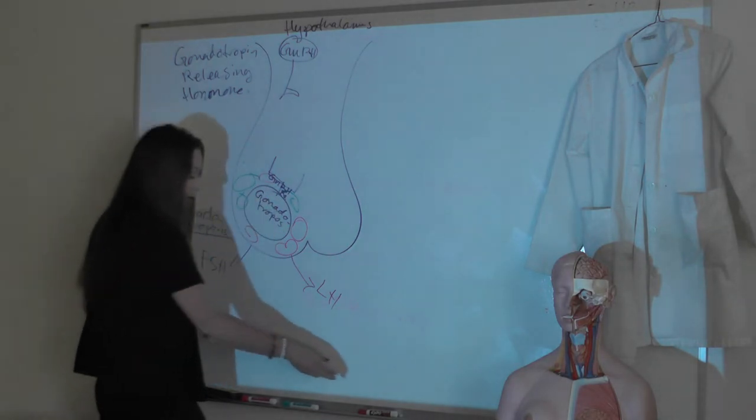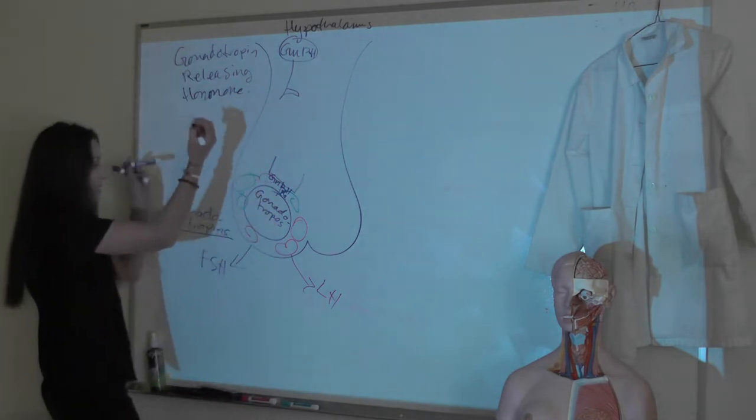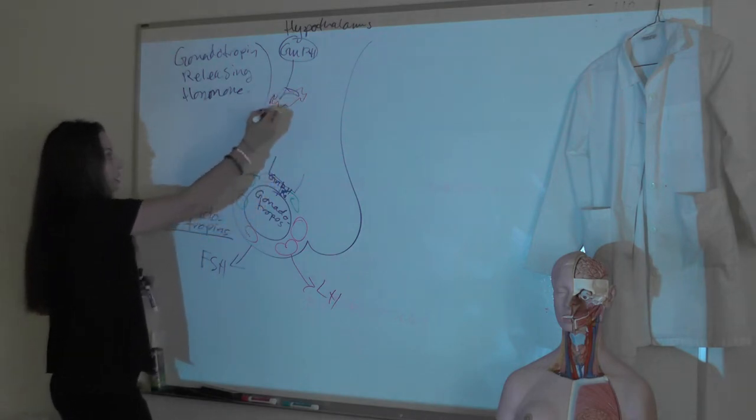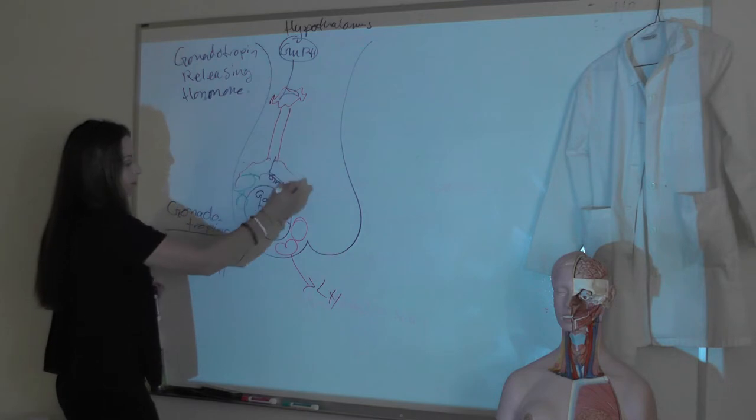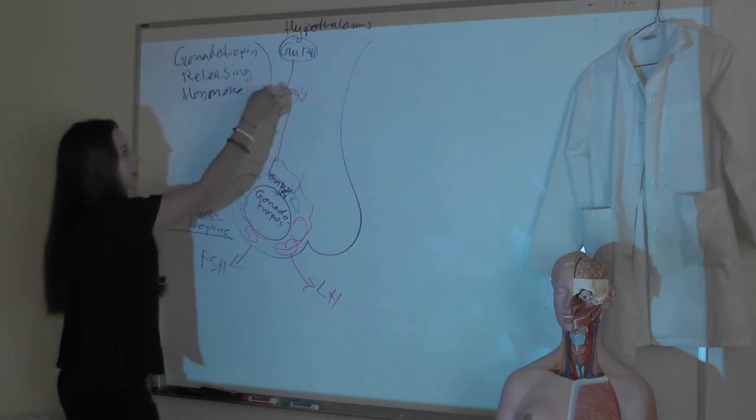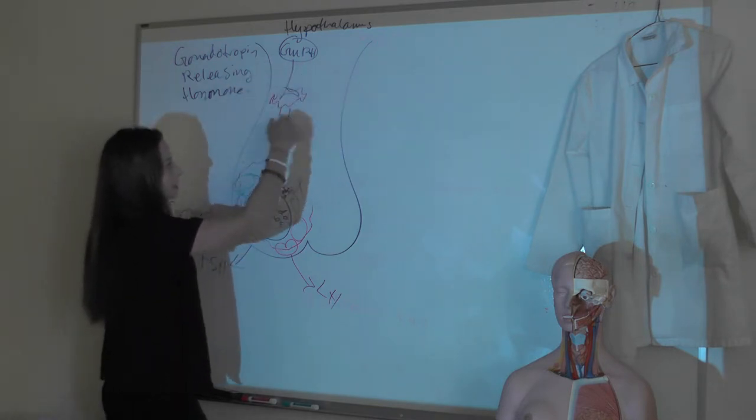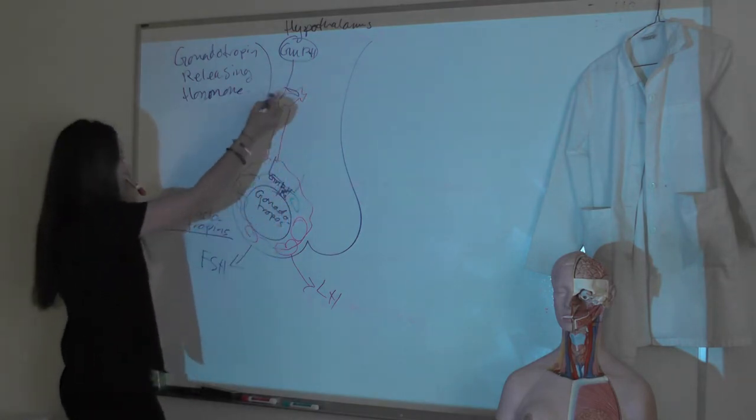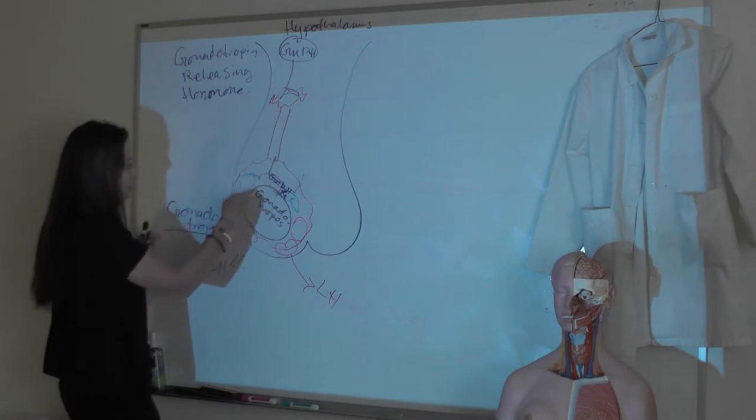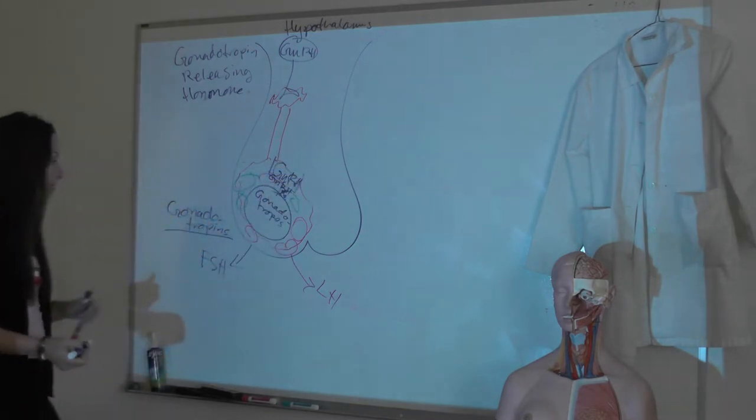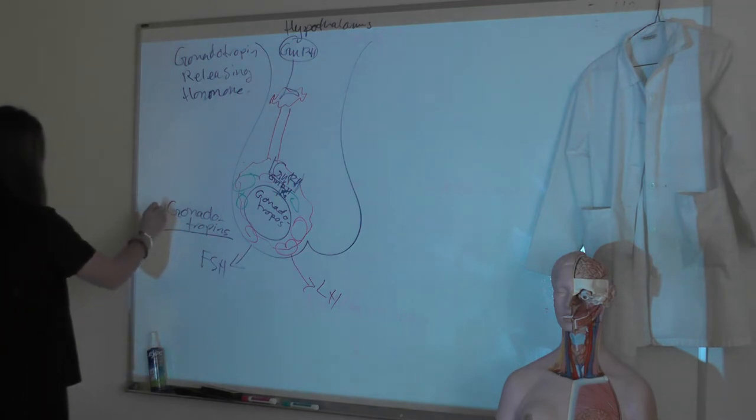Our anterior pituitary is not directly physically connected to the hypothalamus. It's connected through the hypothalamo-hypophyseal portal system, this blood vessel network. GnRH is released into this region called median eminence in the infundibulum, which is the stalk of the pituitary. It will enter the portal veins and pool in secondary plexus capillaries, bind to GnRH receptors, and stimulate the release of our gonadotropins, FSH and LH.